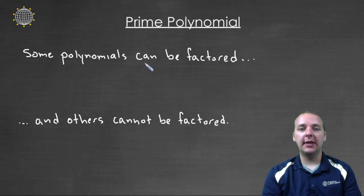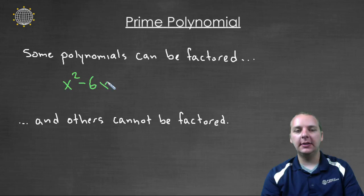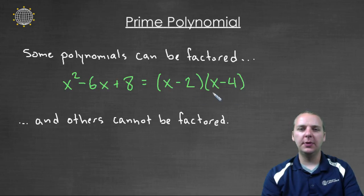So some types of polynomials can be factored. For example, if you had x squared minus six x plus eight, no problem. You could factor this with trial and error using that method, and you get x minus two times x minus four. I skipped some of the details there, but the point is simply that this polynomial was able to be factored.